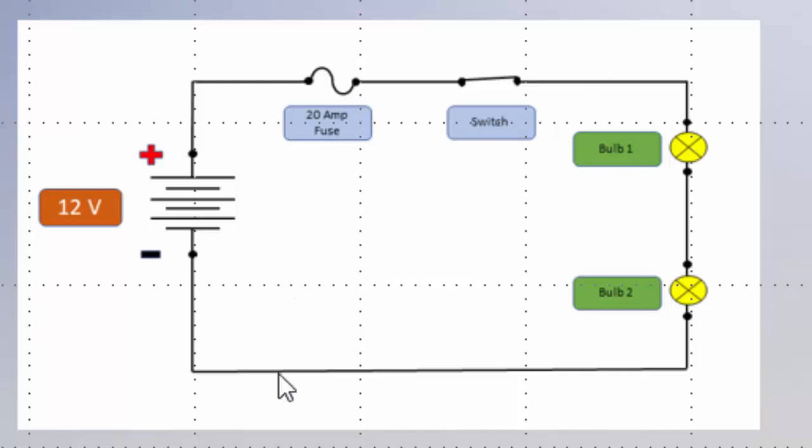we could then just have a circuit that works. So what we need for a circuit to work is the power supply, the load, and the ground path.